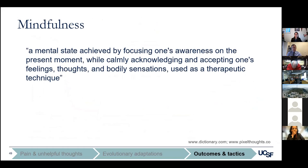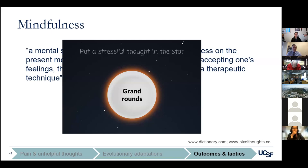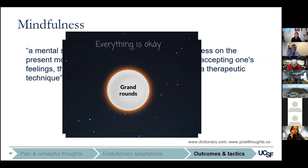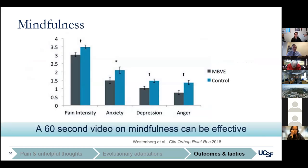Mindfulness is another tactic that's been studied — defined as a mental state achieved by focusing awareness on the present moment while calmly acknowledging and accepting one's feelings, thoughts, and bodily sensations. The goal is to allow unpleasant thoughts and feelings to move to the background rather than dictating behavior. In one randomized controlled trial, 125 patients presenting to an upper extremity orthopedic practice were randomized to a 60-second online mindfulness-based exercise versus an educational pamphlet on pain and stress. The mindfulness exercise asks you to enter a stressful thought, then shows it shrinking in size as captions tell you everything will be okay. This 60-second video resulted in significantly improved pain intensity, anxiety, depression, and anger, though the decrease in pain on the NRS was less than the minimum clinically important difference.